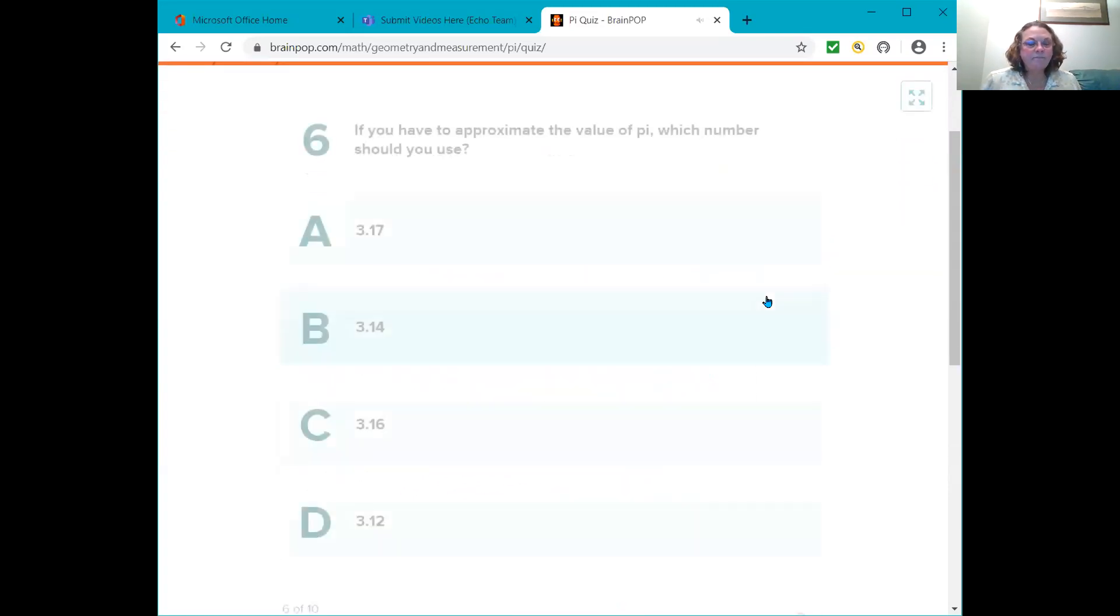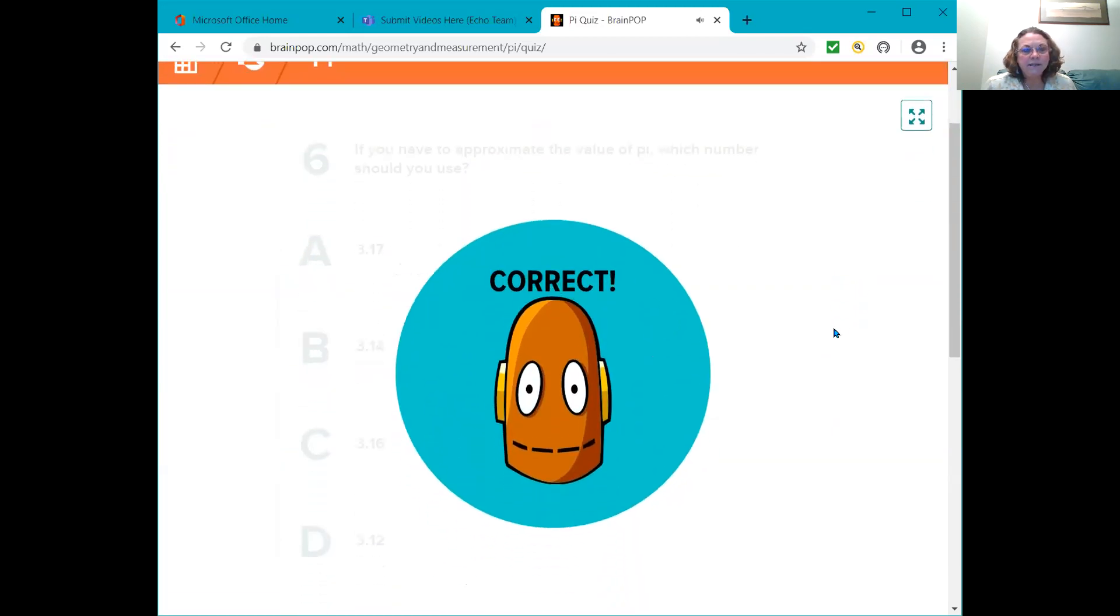Okay. Question six. I hope you're jotting these down and giving it your best shot. If you have to approximate the value of Pi, which number should you use? Is it 3.17? B, 3.14? C, 3.16? Or D, 3.12? Well, the number they use to approximate Pi is 3.14. B is the answer.